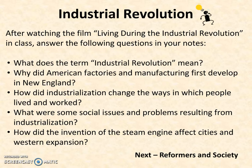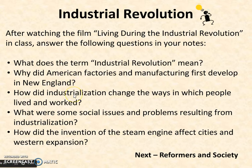Let's look at our review of the Industrial Revolution. In our class, we watched a film called Living During the Industrial Revolution. Some of the key questions are: What does the term Industrial Revolution mean? Why did American factories and manufacturing develop first in New England? How did industrialization change the ways people lived and worked? What were some social issues resulting from industrialization? And how did the invention of the steam engine affect cities and westward expansion? That concludes Lesson 27, and we'll move on to Lesson 28: Reformers and Society.